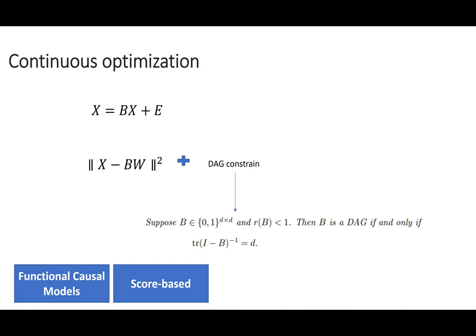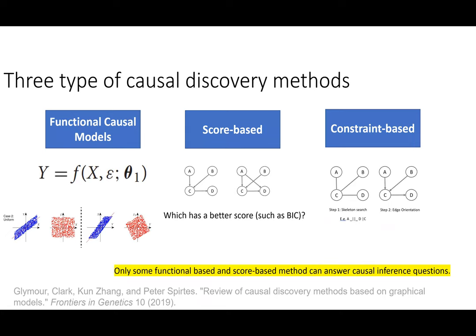Causal discovery takes data and outputs a graph, but it doesn't necessarily estimate the functional relationships between parent and child nodes, and it doesn't focus on answering causal inference questions. Some functional model-based methods have the parameters already, but you still need to extend them. Constraint-based methods are very far from answering causal inference questions like computing the average treatment effect.